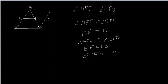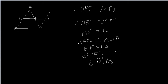Now since BE is equal to CD and also both of them are parallel, hence we can say that the quadrilateral BEDC is a parallelogram. And since this is a parallelogram, we can say that ED is parallel to BC, and hence the midpoint theorem has been proved.